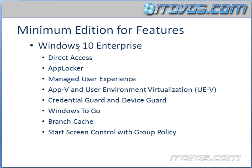Features that are just for Windows 10 Enterprise — and also for the Education edition — include: Direct Access, AppLocker, Managed User Experience, App-V, User Environment Virtualization (UEV), Credential Guard and Device Guard, Windows To Go, BranchCache, and Start Screen Control with Group Policy. Windows 10 Education has everything that Enterprise has — so basically everything — except for Cortana. That's the one exception.